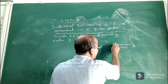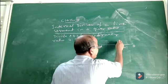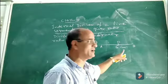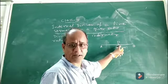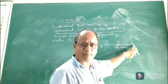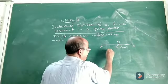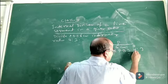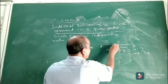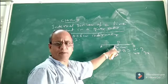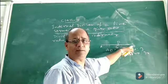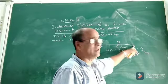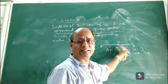It means we have to find a point P on the line segment AB such that the ratio of AP to PB is equal to 4 is to 3 — that is, 4x is to 3x. If the length of AP is 4 parts, then the length of PB will be 3 parts. So we say AP is to PB equal to 4 is to 3, meaning the point P divides AB internally in the ratio 4 is to 3.